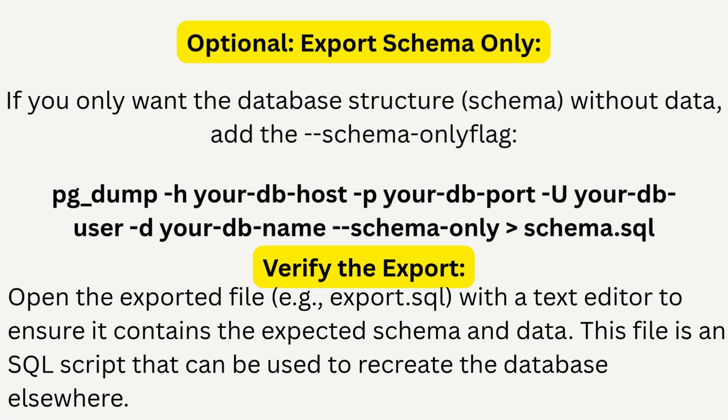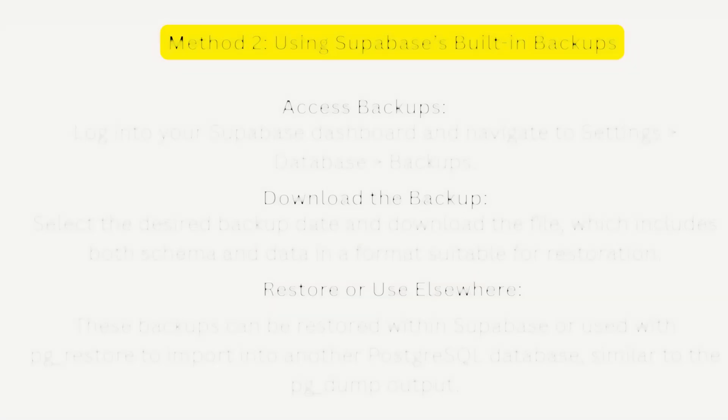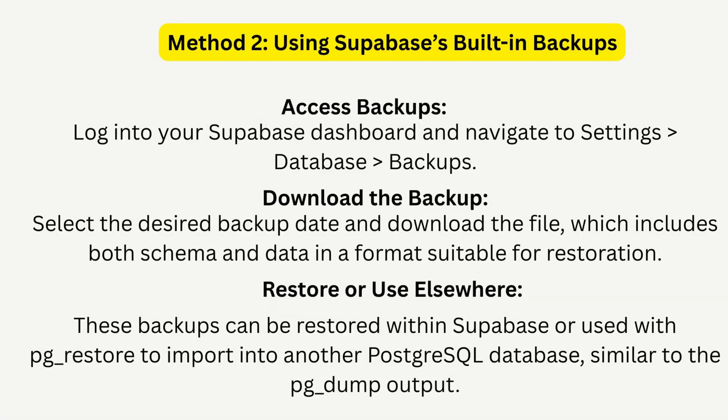Don't want to use the command line? Supabase has you covered with automatic backups. In the dashboard, go to Settings, then Database, and find the backup section. You can download backups from the last seven days if you are on the Pro plan, or 30 days for Enterprise. Just select the backup you want and download it.